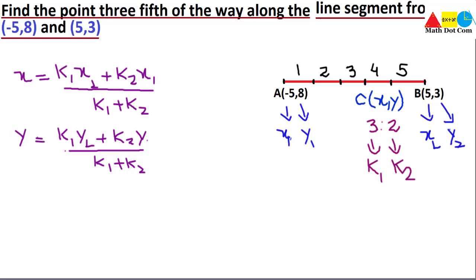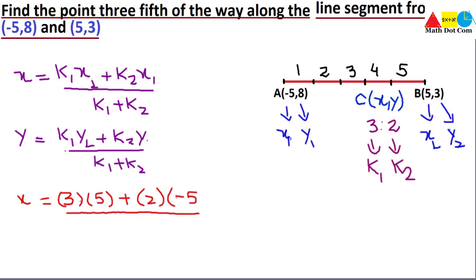Let's calculate the x-coordinate. x = (k1·x2 + k2·x1) / (k1 + k2) = (3×5 + 2×(−5)) / (3 + 2) = (15 − 10) / 5 = 5 / 5 = 1.